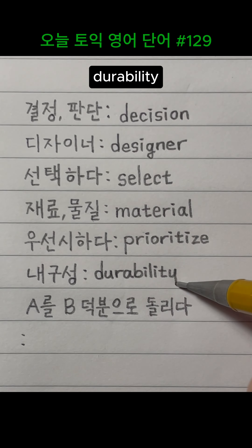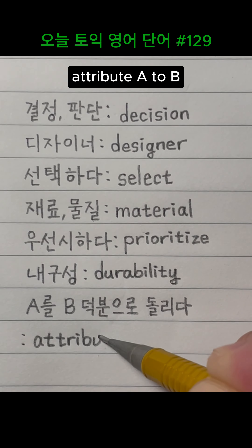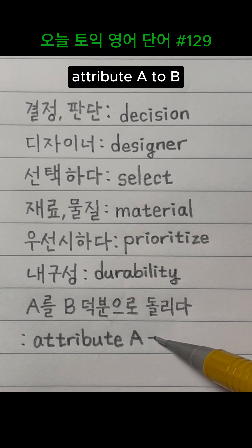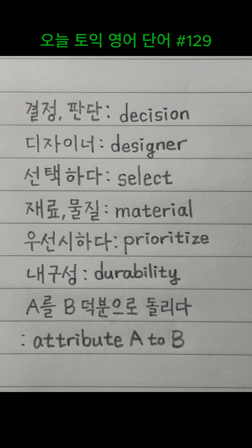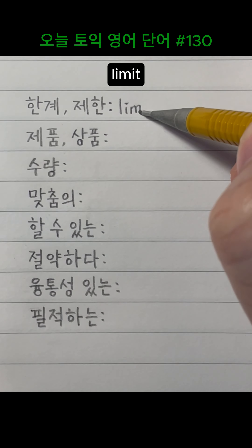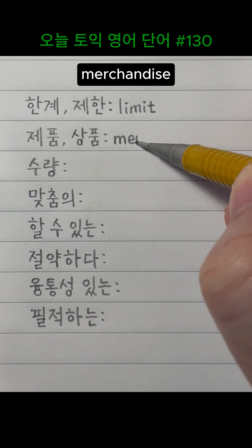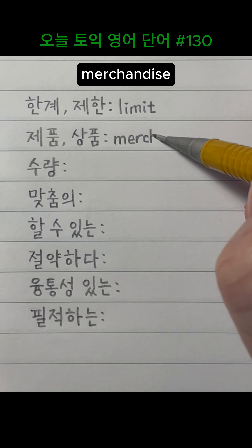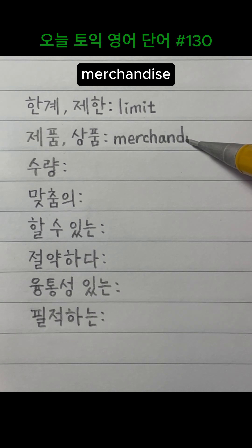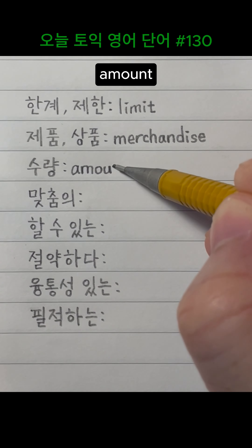Attribute A to B. Limit. Merchandise. Amount.